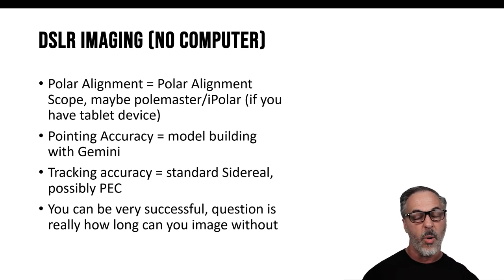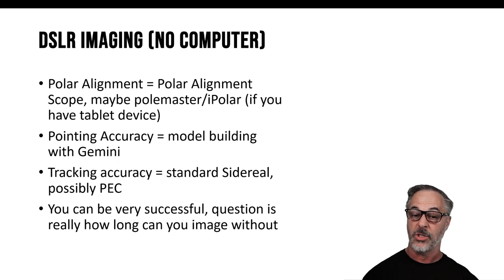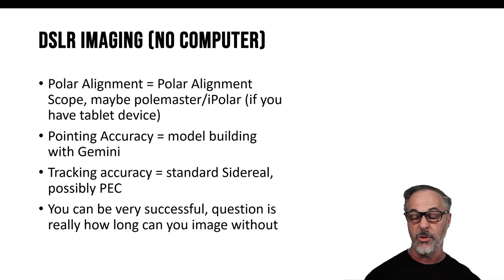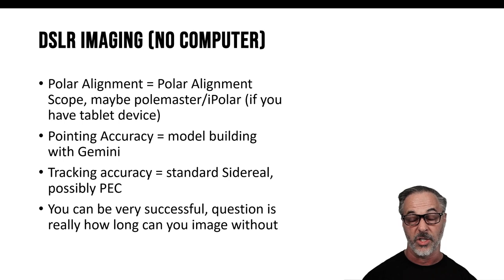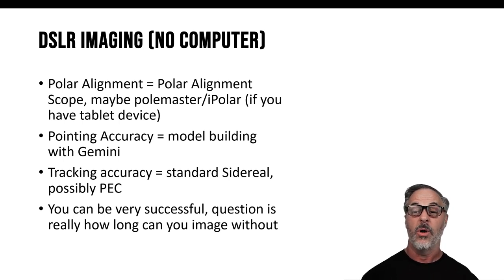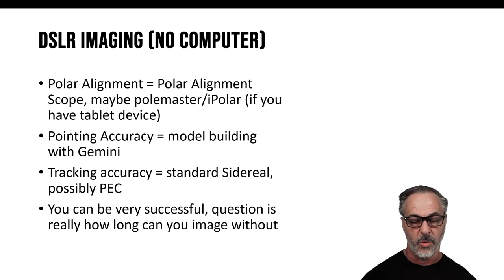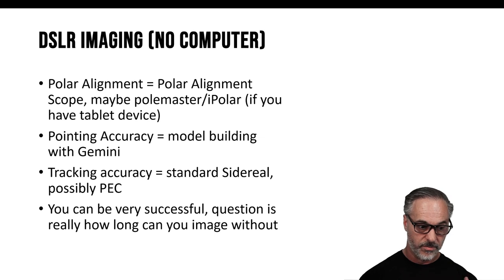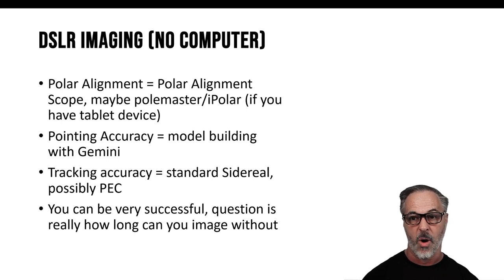When it comes to pointing accuracy for DSLR/mirrorless imaging, you want to build a pointing model because you're not able to use a computer with the more advanced techniques. You still want whatever target you're slewing to with a GoTo command to land on your sensor — you don't want to be fishing around trying to find it. Building a pointing model using the Gemini computer, GoTos, and aligns is an important part of making sure your target lands on your sensor.